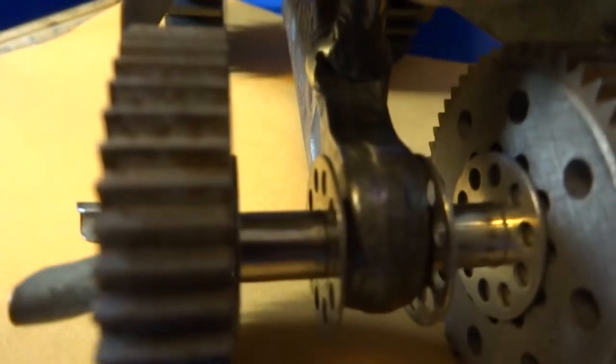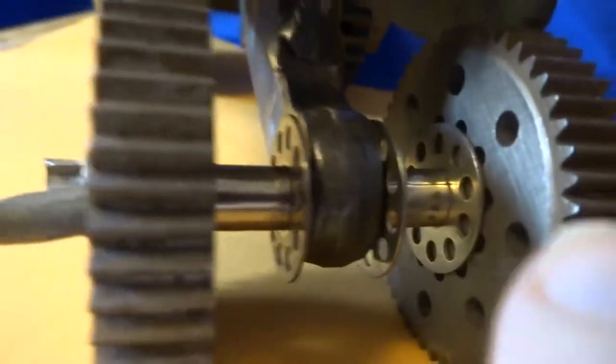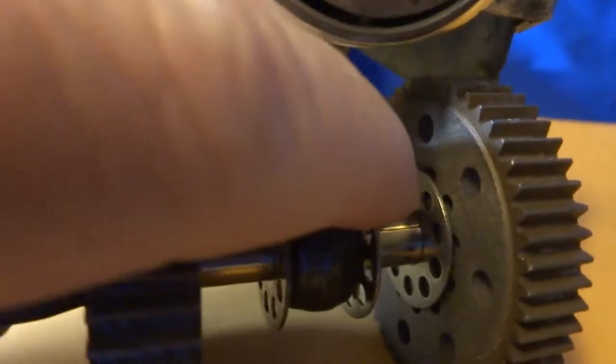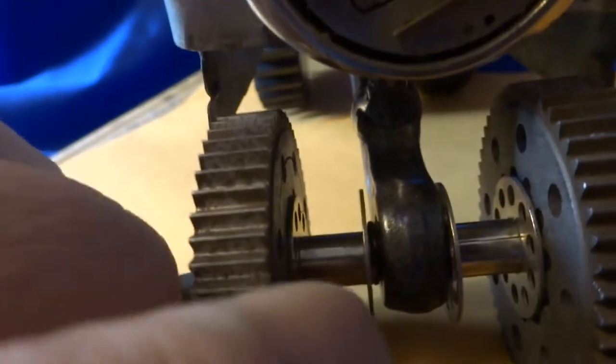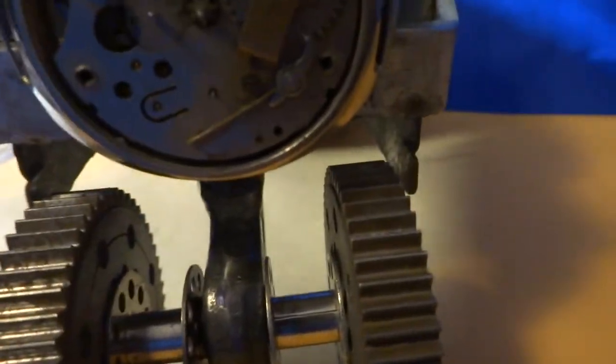There's two bobbins in here. This is a bobbin right here. And there's another one on the other side. Two bobbins that are part of it.